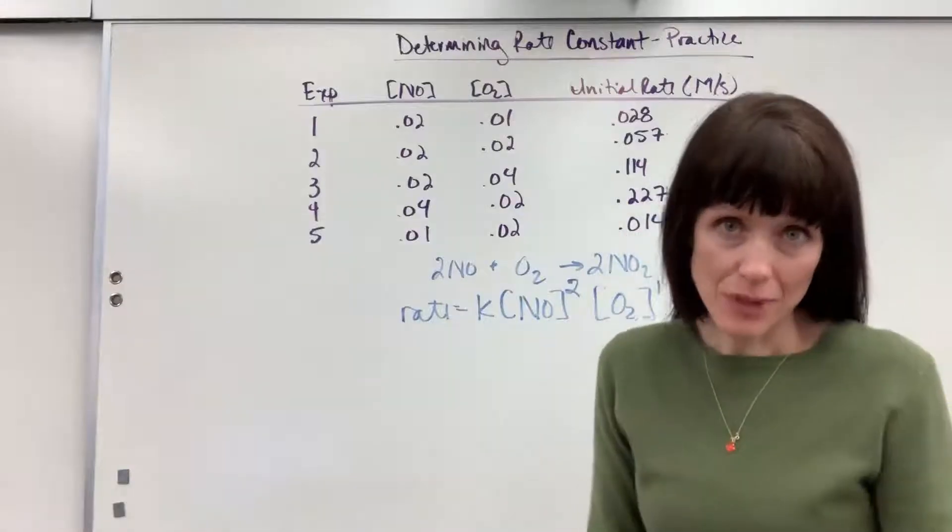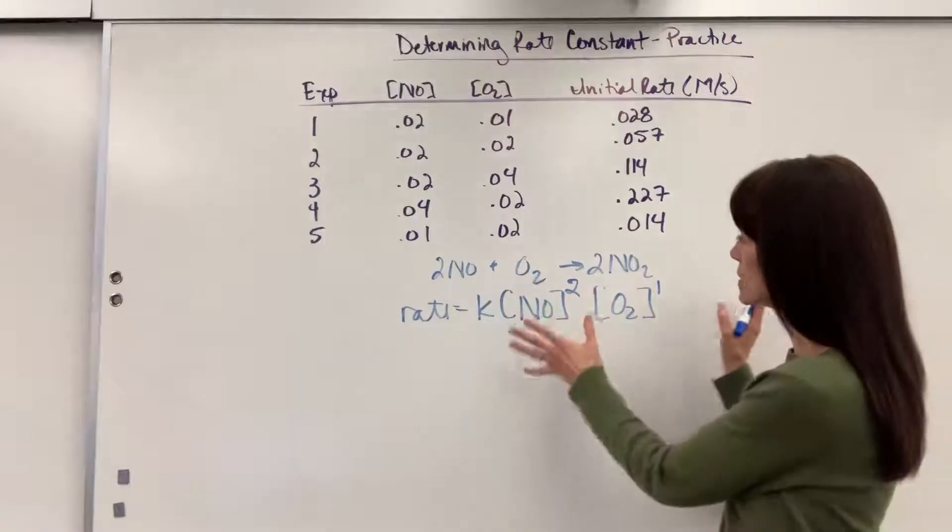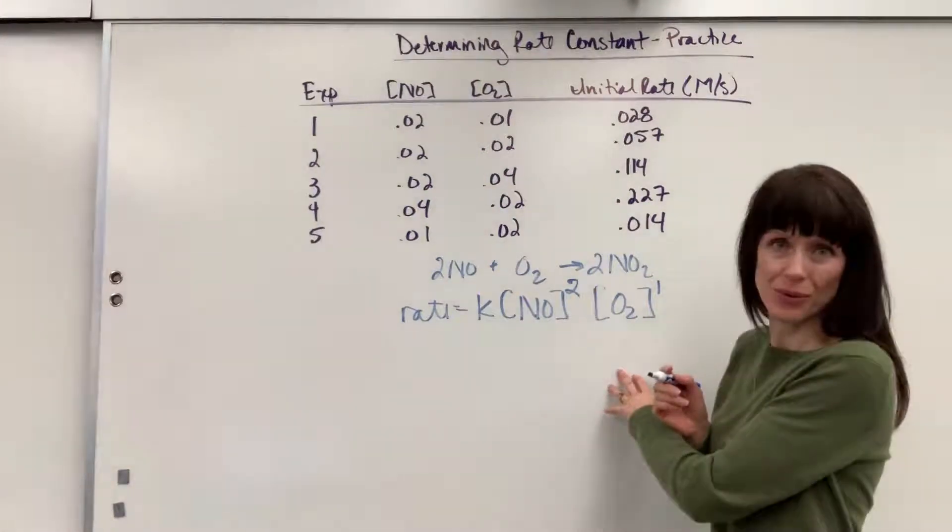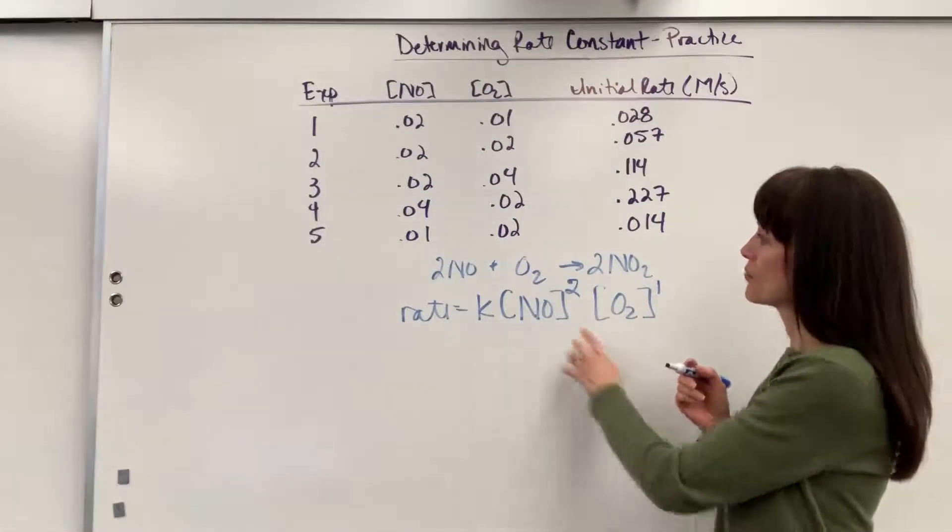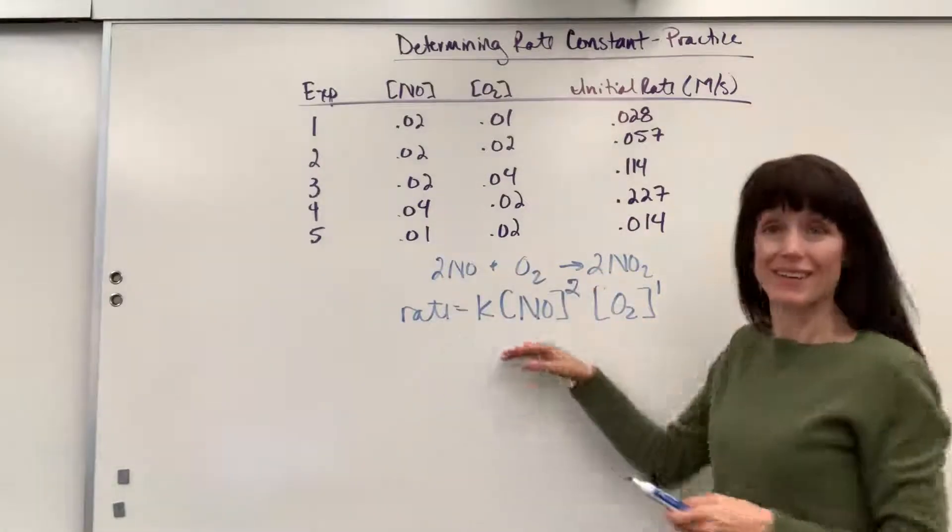Hi, let's do a little more practice on determining rate constant. We determined that the rate equation, the rate law for two moles of NO plus one mole of O2 yielding two moles of NO2, here it is.